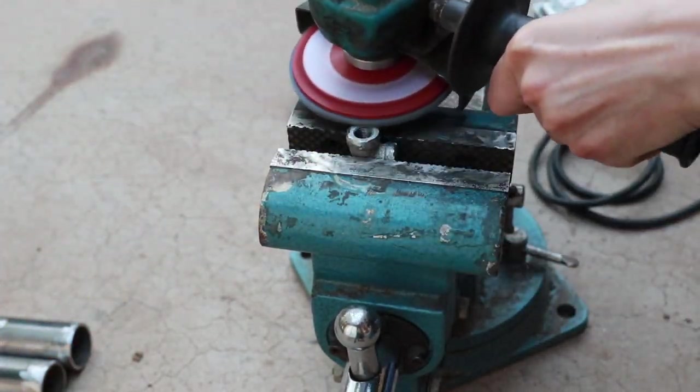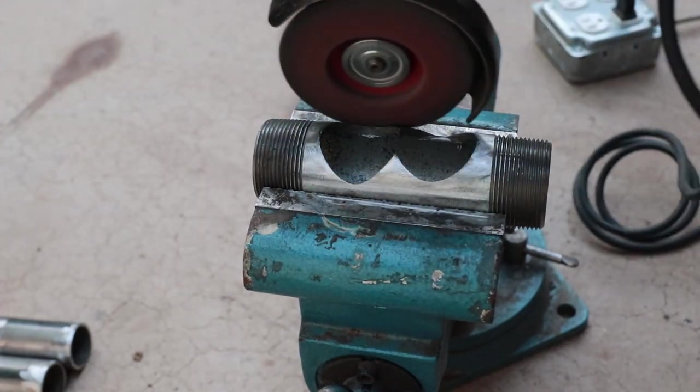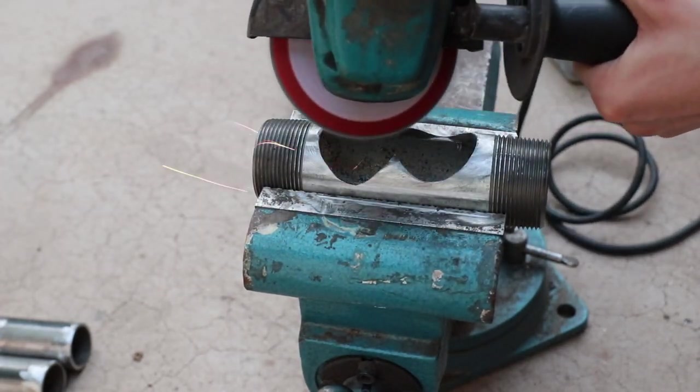This little elbow there is actually going to be part of the vacuum system as well, which you'll see later. And finally, I'm knocking the zinc off of the galvanized pipe, so the welds are better there too.